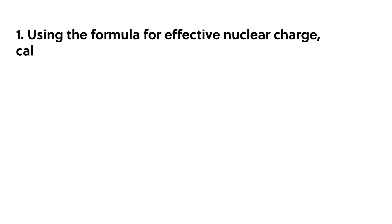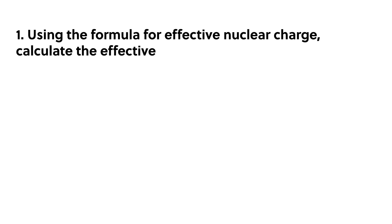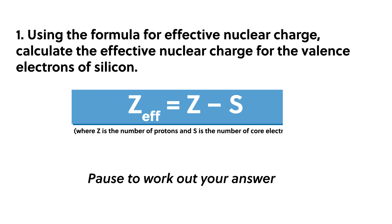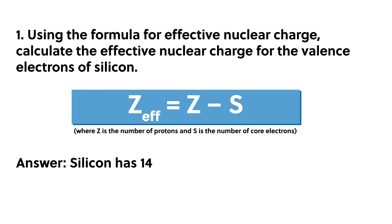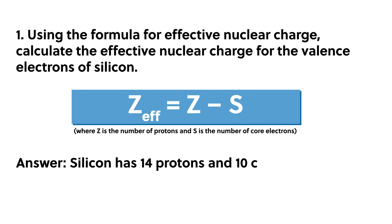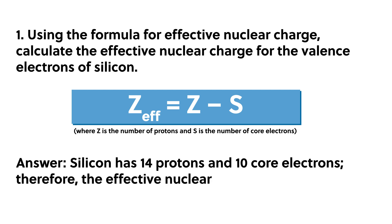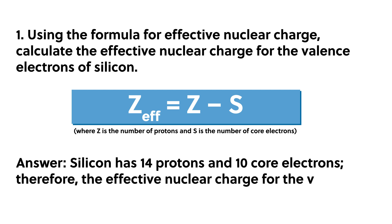Review question one: using the formula for effective nuclear charge, calculate the effective nuclear charge for the valence electrons of silicon. Silicon has 14 protons and 10 core electrons. Therefore, the effective nuclear charge for the valence electrons is four.